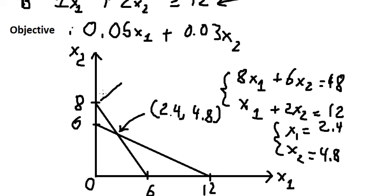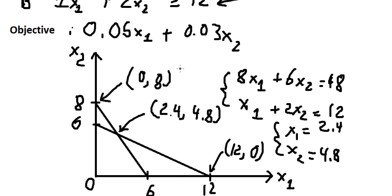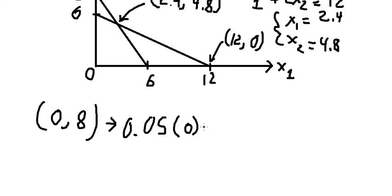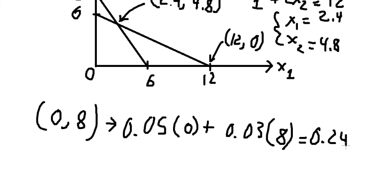The corner points are: (0, 8), (12, 0), and (2.4, 4.8). After we have all the corner points, we can substitute each value into the objective function. We put 0.05 multiplied by 0 and 0.03 multiplied by 8, giving us 0.24.